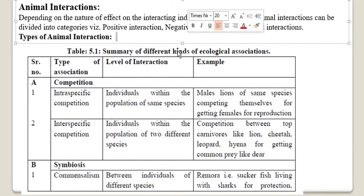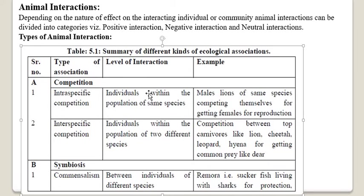In intraspecific competition, individuals within the population of the same species interact with one another for food, shelter, or mate. For example, male lions of the same species compete with each other for getting a female for reproduction — the interaction within the same species among lions is for mate.